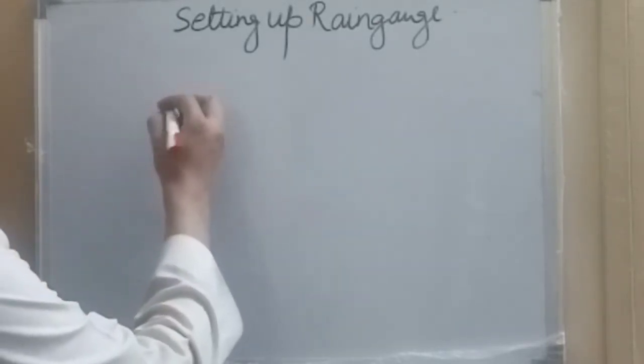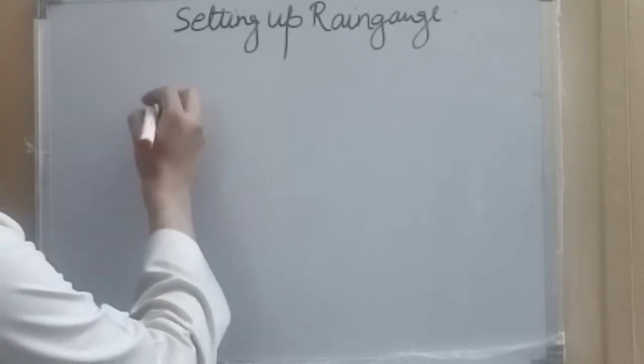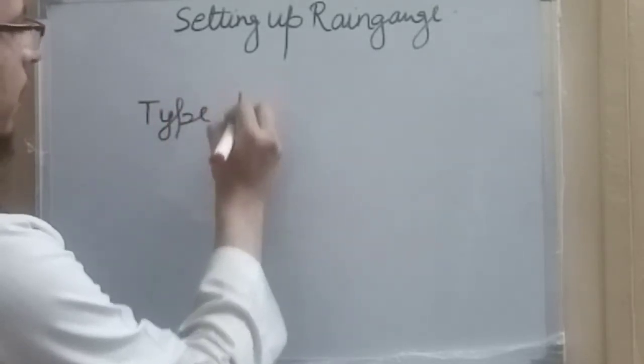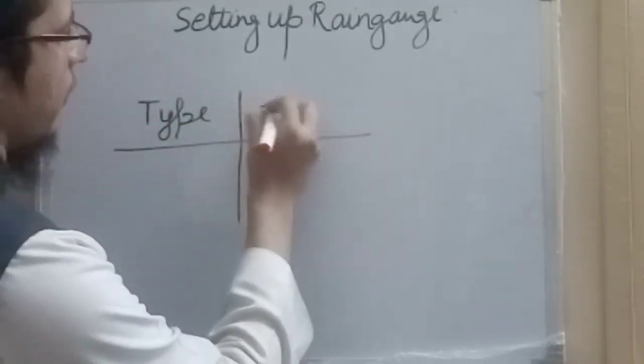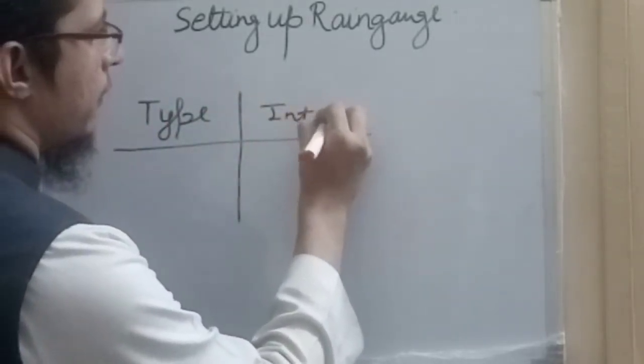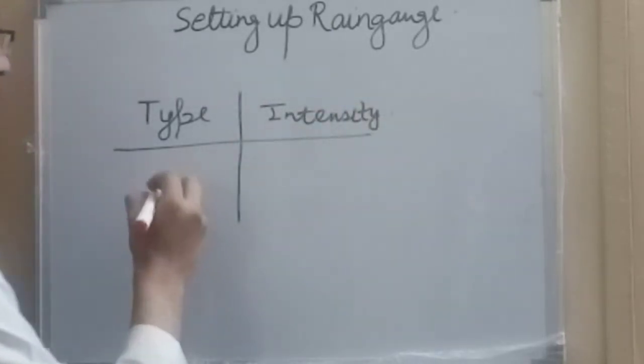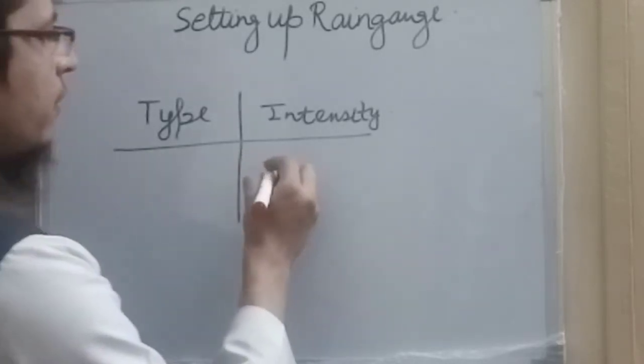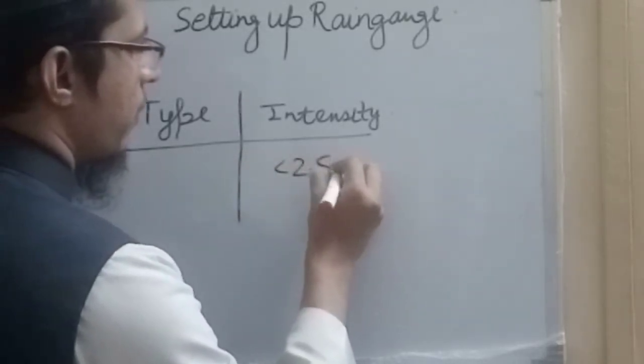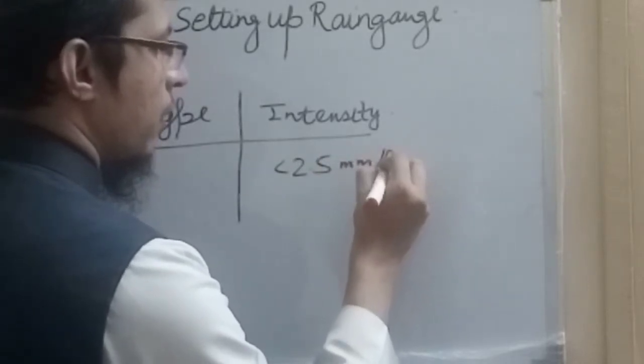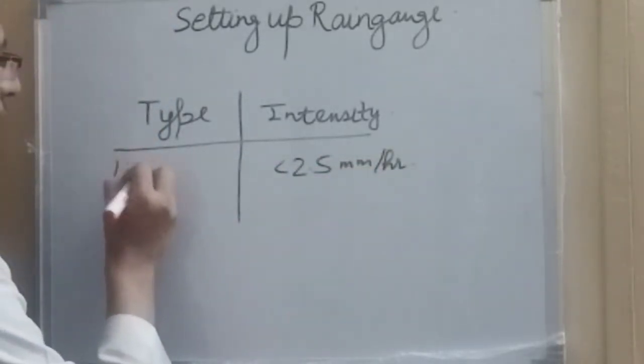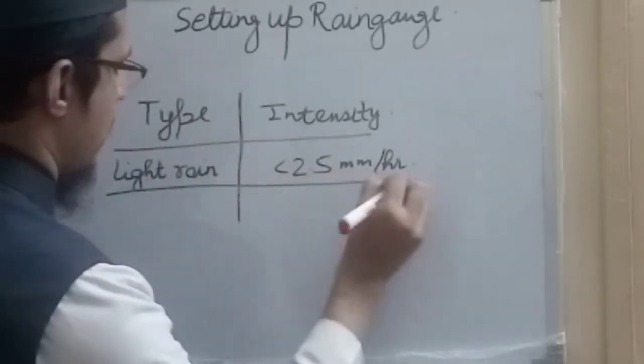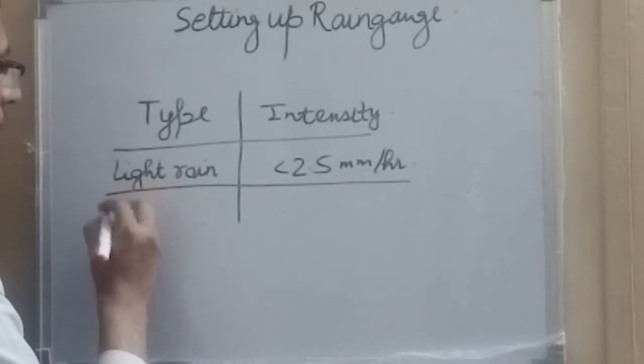Type of rainfall and here the intensity. So if the rainfall intensity is less than 2.5 mm per hour, then it is classified as light rain. And if the rainfall intensity is between 2.5 to 7.5 mm per hour, then it is classified as moderate rain.